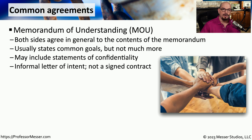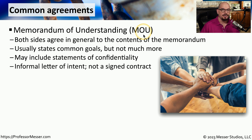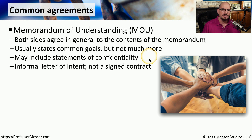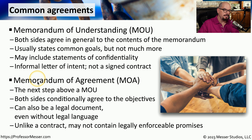If you're entering into a partnership with a third party, you might want to start with a Memorandum of Understanding, or MOU. These generally provide very broad goals of what the two organizations will accomplish by working together. This might also include confidentiality statements. It's not a signed contract — it's more of a broad, informal overview of how two organizations might work together in the future.